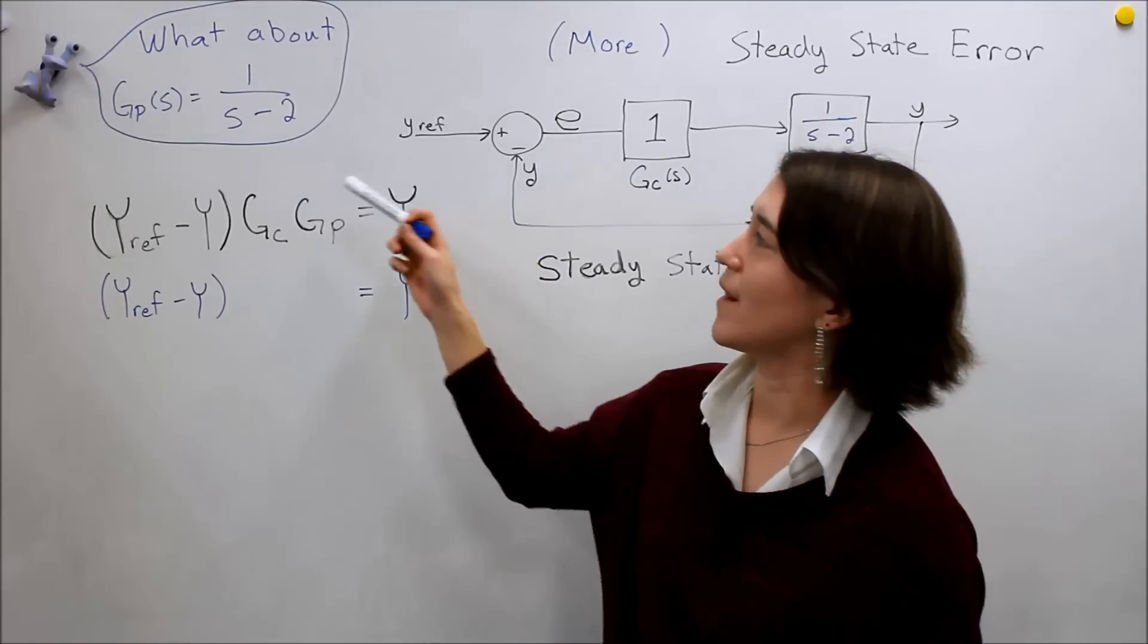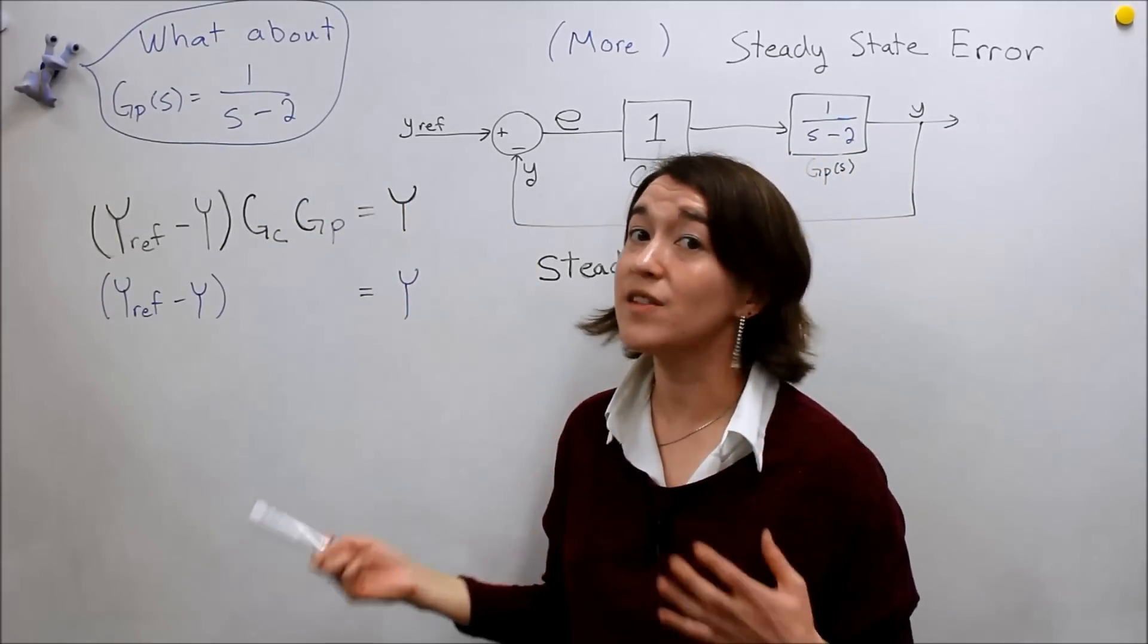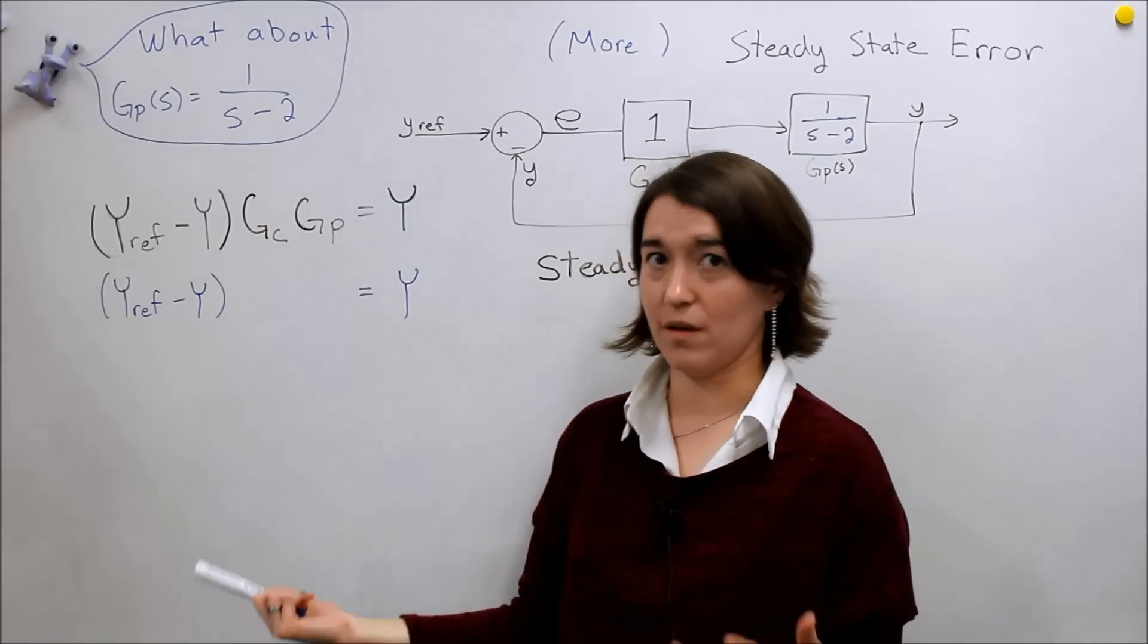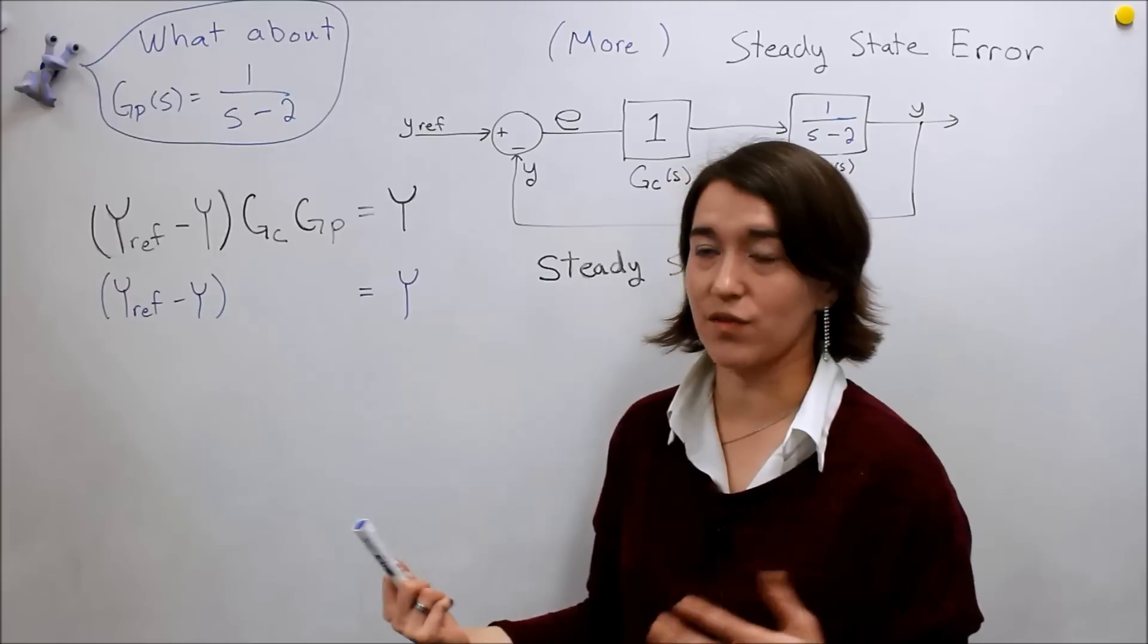And this is an unstable system, so this is s minus 2, right? So the pole is in the positive right half plane, so it's positive 2.